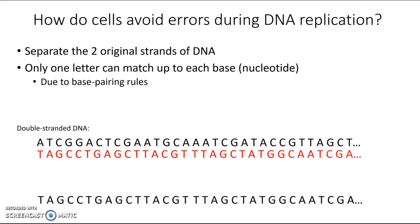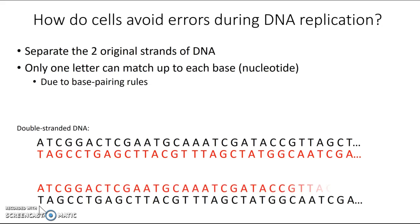For each letter, there's only one thing that can pair up with it. If there's a G here, only C can come and pair up with it. The same thing happens on the second strand — if there's a T available for pairing, the only thing that can pair up with it would be A. This is how cells minimize errors during the DNA replication process by using those base pairing rules. There are still a few mistakes once in a while, but in general it's really, really reliable.